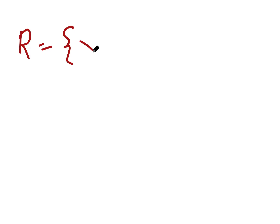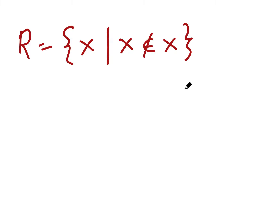We can define the Russell set R as the set of all sets such that that set is not a member of itself. You may say sets can't contain themselves. Well, even if you say that, this still makes sense, because that would mean every set would be a member of the Russell set, since every set does not contain itself.